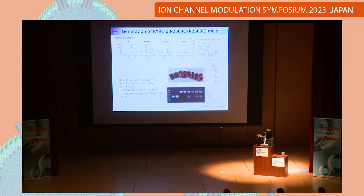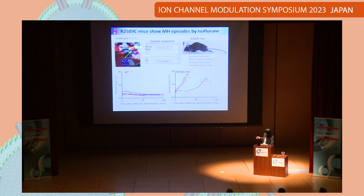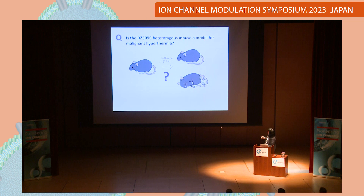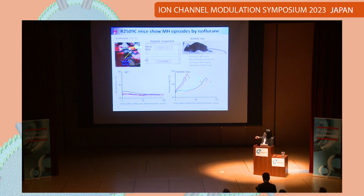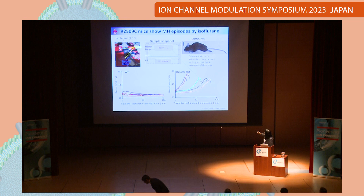Homozygous mice are lethal in utero. On the other hand, heterozygous mice grow normally. First question: is this heterozygous mouse a model for malignant hyperthermia? To test the MH phenotype, we exposed the mice to isoflurane and then measured the rectal temperature. Wild type did not show increased rectal temperature. On the other hand, heterozygous mice showed increased rectal temperature, fulfilling an MH crisis — with full body contraction, arching their backs, and extension of their legs.